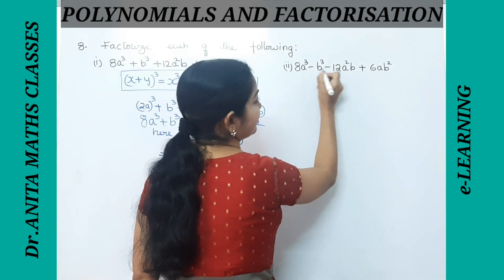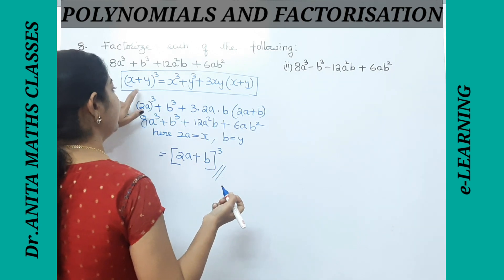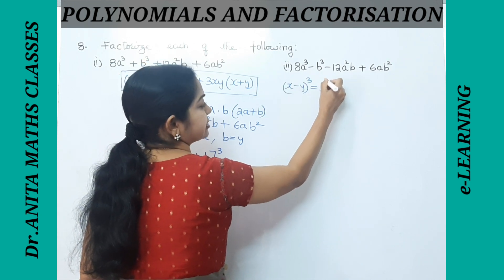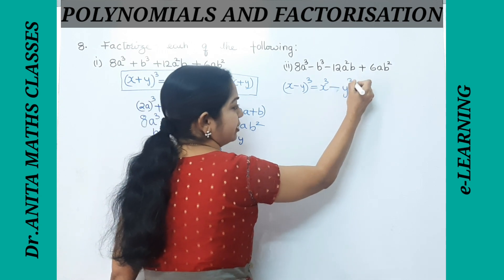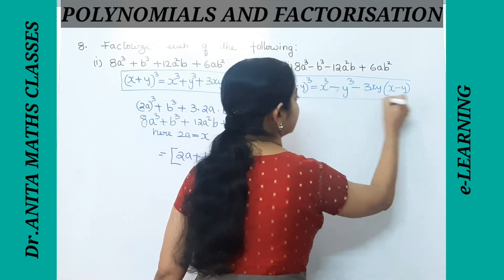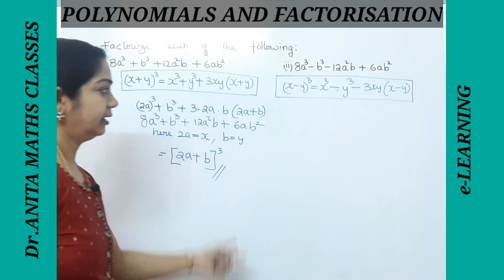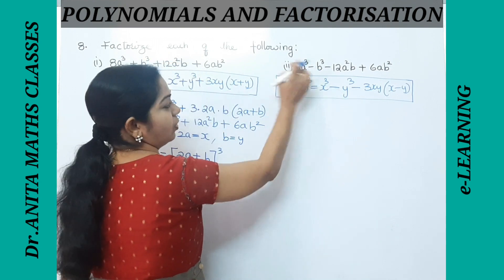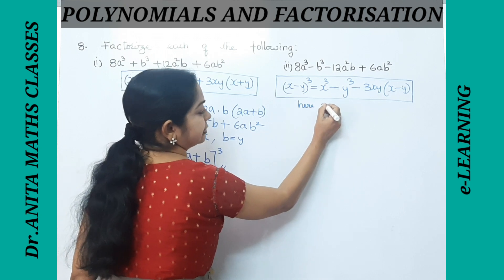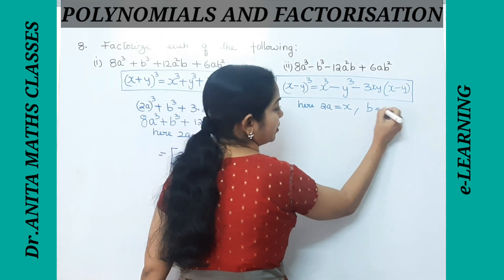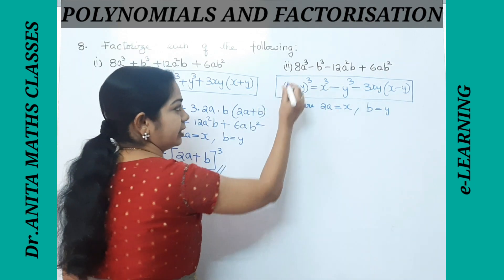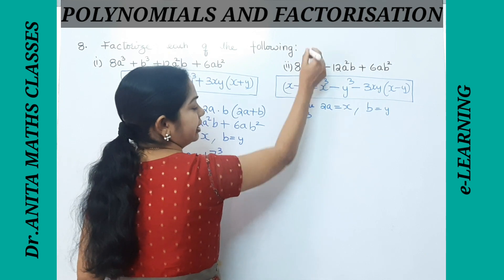For the second part, we have negative signs, so we switch to the (x − y)³ identity: (x − y)³ = x³ − y³ − 3xy(x − y). Remember this formula. All terms are the same as the first part but with negative signs. Again, I take x = 2a and y = b — the negative sign is already in the formula.